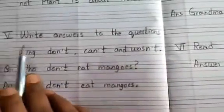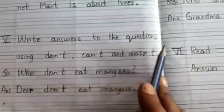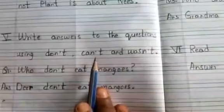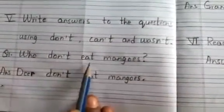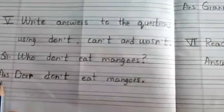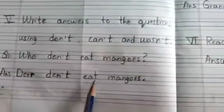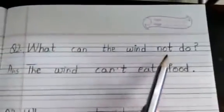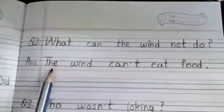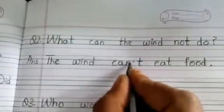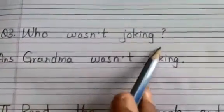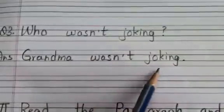Okay, now come to the fifth bit: write answers to the questions using don't, can't and wasn't. First question: 'Who don't eat mangoes?' Answer: 'Deer don't eat mangoes.' Question number two: 'What can the wind not do?' — 'The wind can't eat food.' Now the third question: 'Who wasn't joking?' — 'Grandma wasn't joking.'